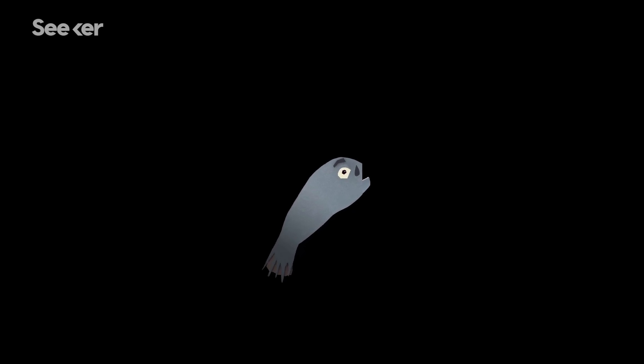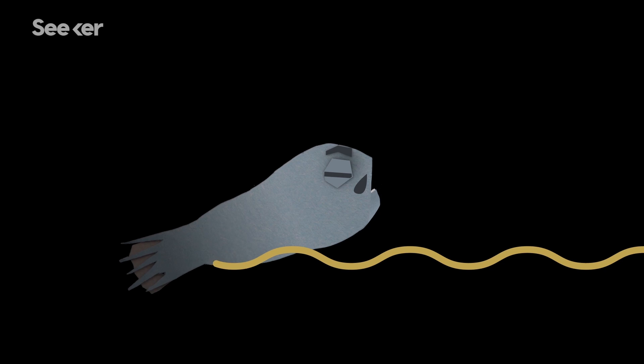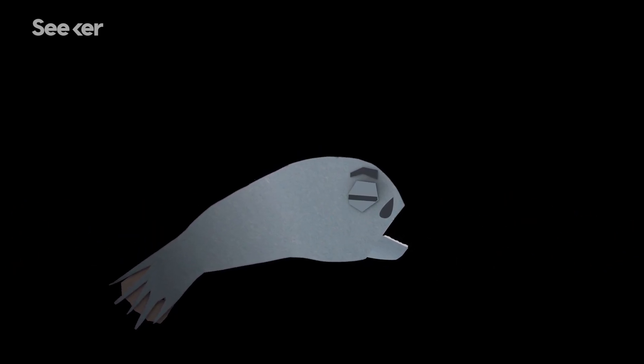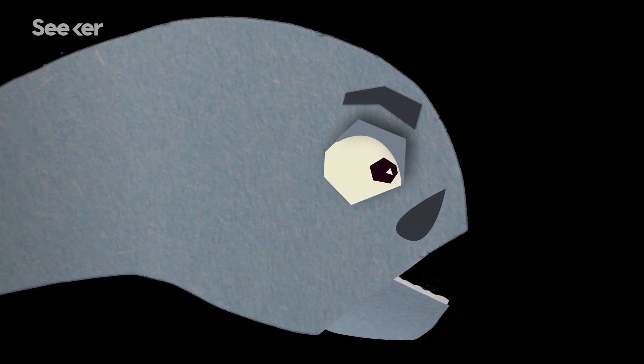To stand a chance, male anglerfish need to use their disproportionately large nostrils to track the pheromonal cues of their lady loves and their complex and well-developed eyes so they can confirm a female's identity once they're close enough.